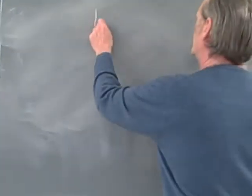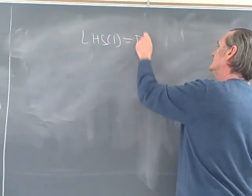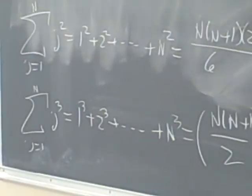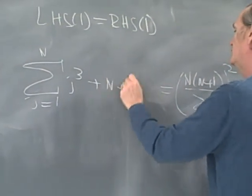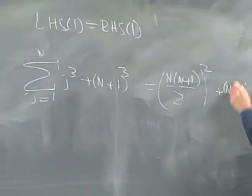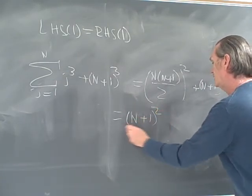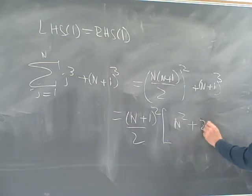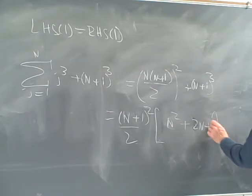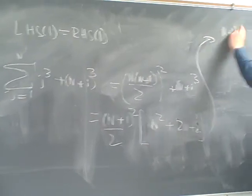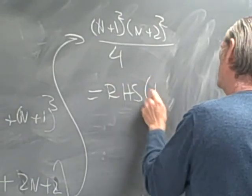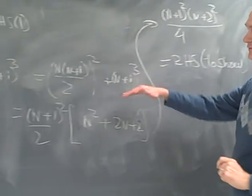For the last identity — the sum of j cubed — I'll skip verification at n equals 1 and leave that to the viewer. In the inductive step, after adding (n plus 1) cubed to both sides and simplifying, we factor to get (n plus 1) squared times (n plus 2) squared over 4, which equals the quantity (n+1)(n+2)/2 squared. That is the right-hand side of what we were trying to show, so that is a sketch of the proof that all three identities hold.